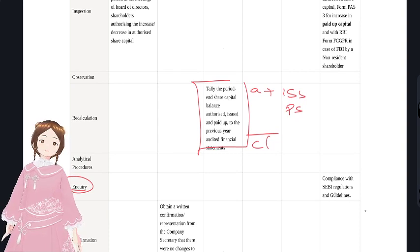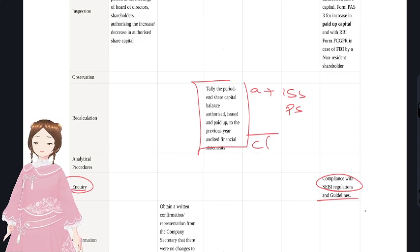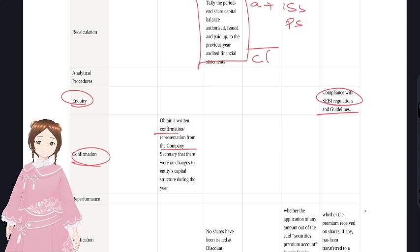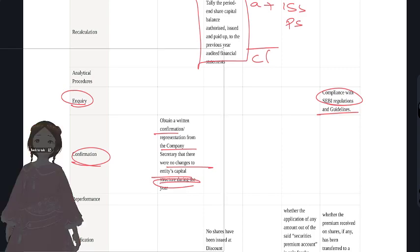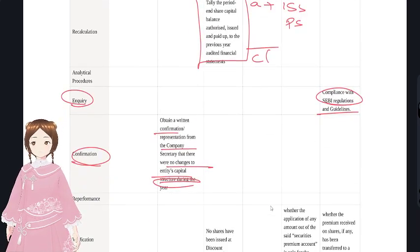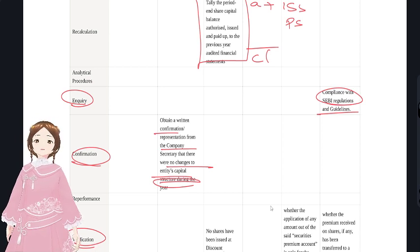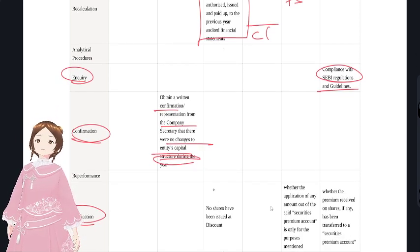For inquiry, ask the company secretary whether they are complying with SEBI regulations and guidance notes. For external confirmation, obtain a written confirmation or representation letter from the company secretary that there were no changes to the entity's capital structure during the year.